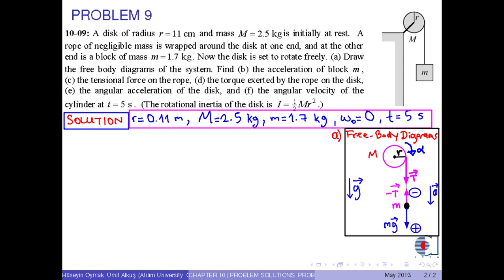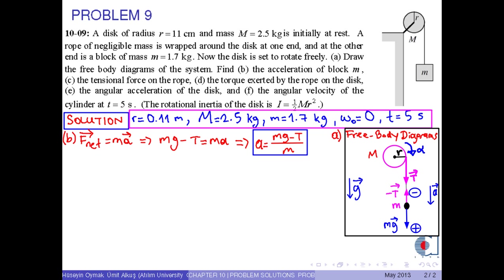In part B, to find the acceleration of block m, we utilize Newton's second law, which is F net equals m times a. Here, F net in the direction of a equals m times g minus T. We find an expression for linear acceleration as m times g minus T over m.